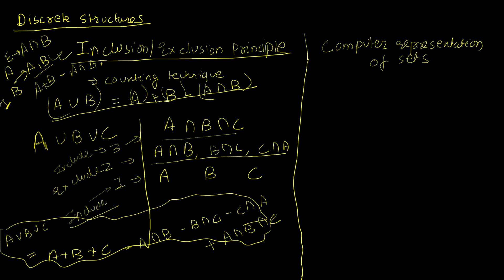To define this more formally: the inclusion-exclusion principle allows us to calculate the union of any number of sets by first taking permutations of one set at a time, then two sets at a time, progressively until all permutations are reached. For each permutation we start by including, then excluding, then including alternatively, and the result is the union of those sets.